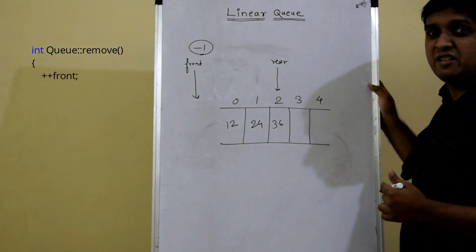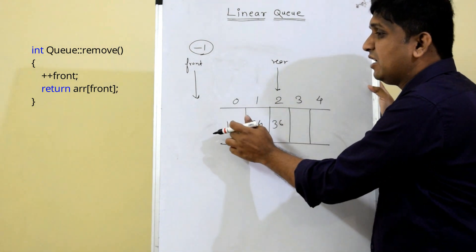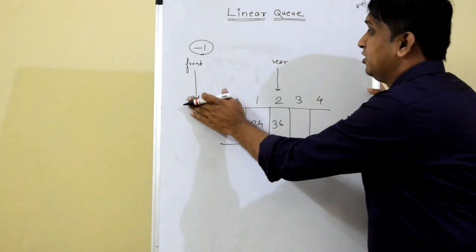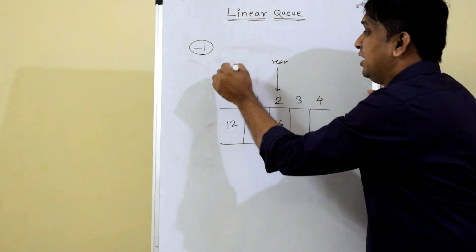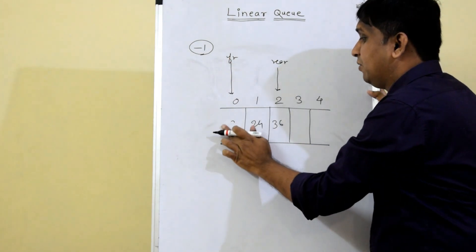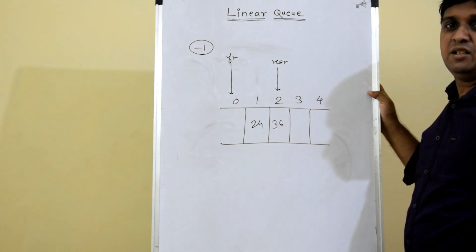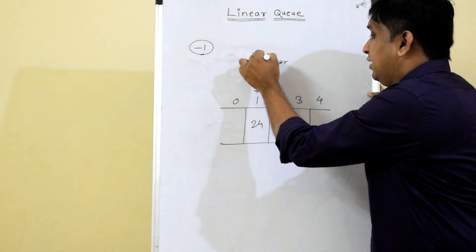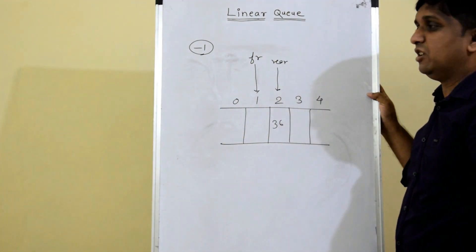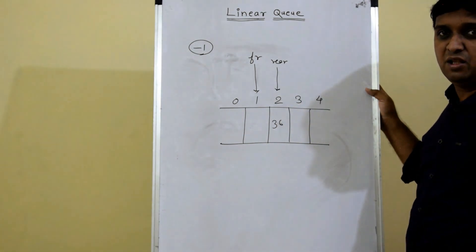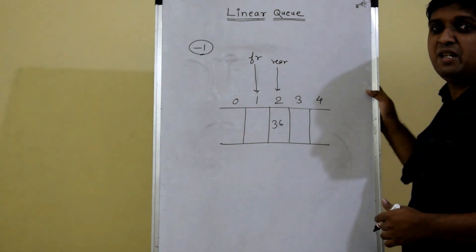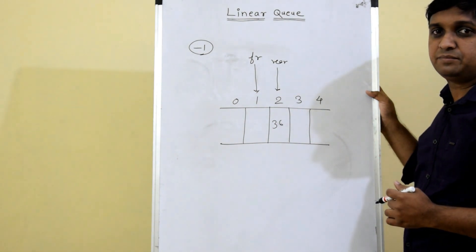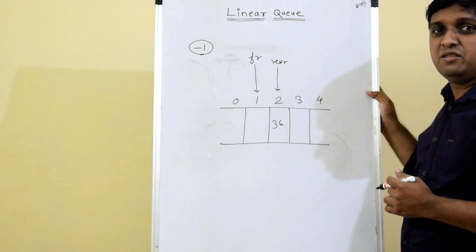For the remove function, it is similar: first increment the front value, then return the element at the incremented index. So if we call remove the first time, front goes from minus one to zero and 12 is returned. Second time, front goes from 0 to 1 and 24 is returned. Third time, front goes from 1 to 2 and 36 is returned. The algorithm for remove: increment front, then return element at incremented index.